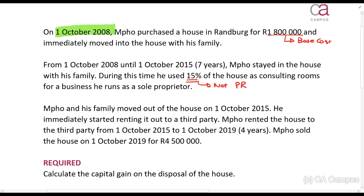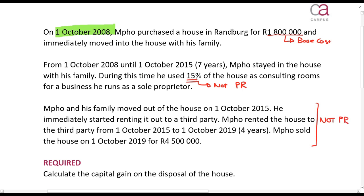His family moved out of the house on the 1st of October 2015 and he immediately started renting it out to a third party. Paul rented the house to the third party from the 1st of October 2015 to the 1st of October 2019 for 4.5 million rands. During this rental period it was not a primary residence either. The times when it was not a primary residence, or the portions that were not a primary residence, cannot qualify for the primary residence exclusion.